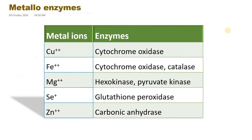Now we will move on to metalloenzymes. Metalloenzymes are enzymes that require metal ions as cofactors. Coenzymes are loosely or non-covalently attached to the enzyme, whereas some metal ions can be bound loosely or sometimes covalently and tightly. For example, cytochrome oxidase requires copper. Cytochrome oxidase and catalase also require ferrous iron. Hexokinase and pyruvate kinase require magnesium. Glutathione peroxidase requires selenium. Zinc is the metal ion for carbonic anhydrase.